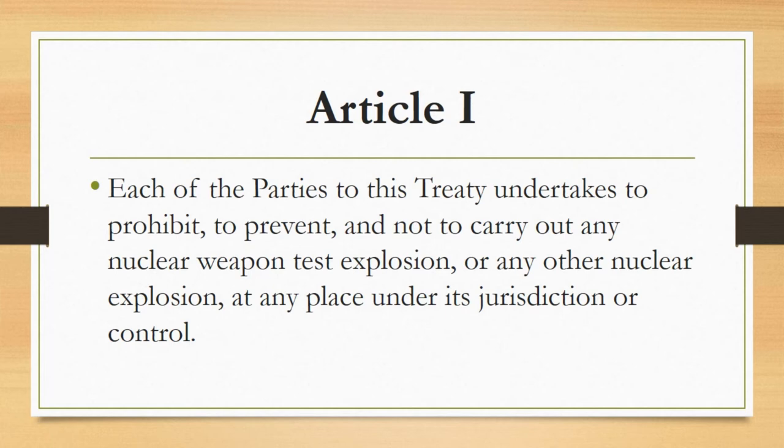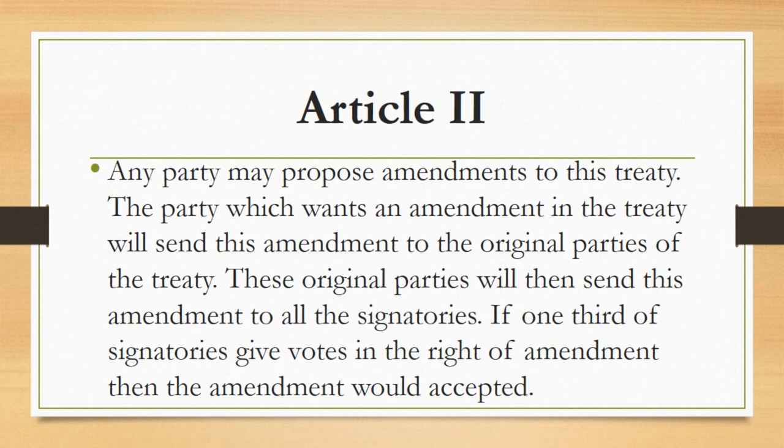Article number one: each of the parties to this treaty undertakes to prohibit, to prevent, and not to carry out any nuclear weapon test explosion or any other nuclear explosion at any place under its jurisdiction or control.